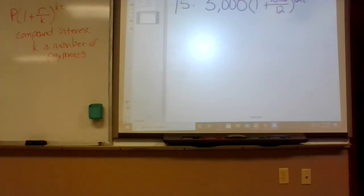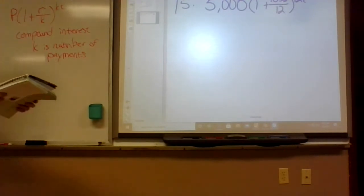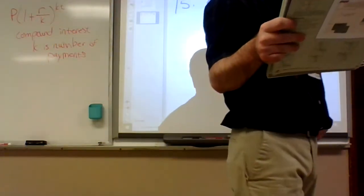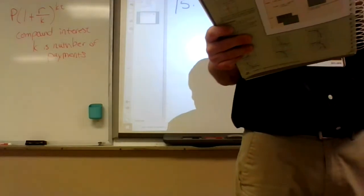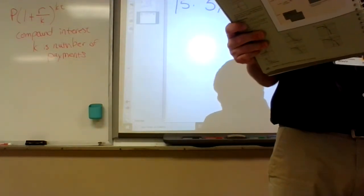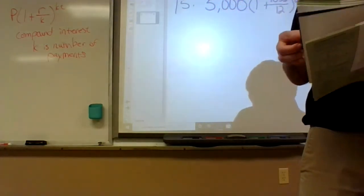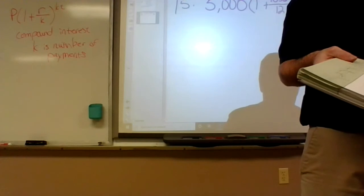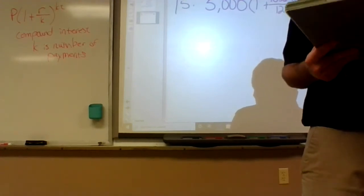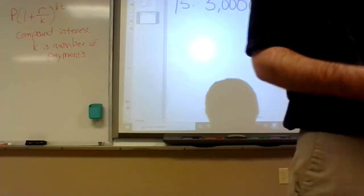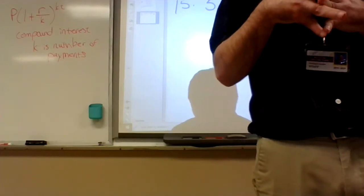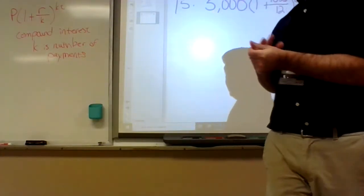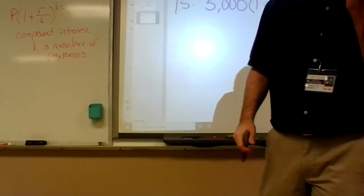Number 14 says quarterly — that's 4 times a year, so put a 4. Number 16 says daily — that's 365 times a year. Daily compounding splits your interest rate by 365, so you'd be getting tiny tiny amounts each day, but it does add up slightly more than monthly.